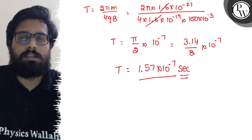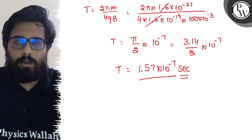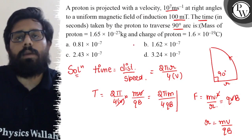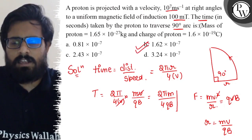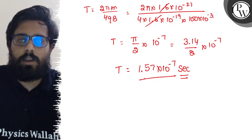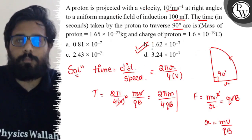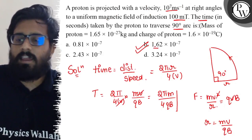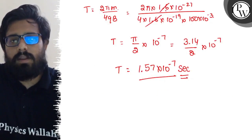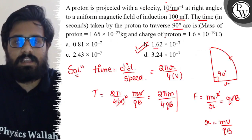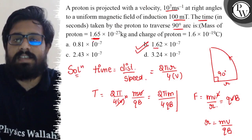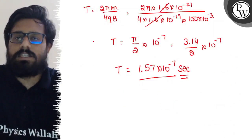Solving it further, you get a value of 1.57 × 10^-7 seconds. So 1.57 × 10^-7 is my answer. Now see, there is some variation in the options because our answer is 1.57.